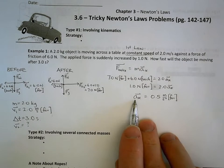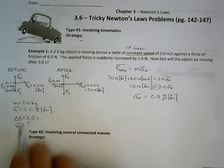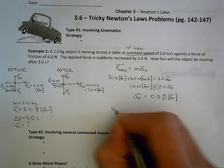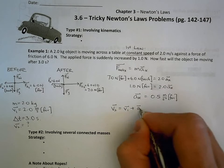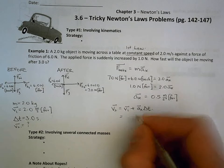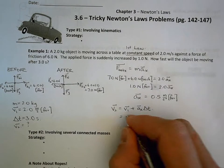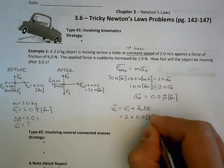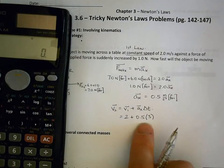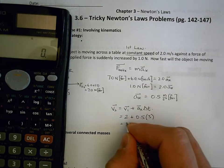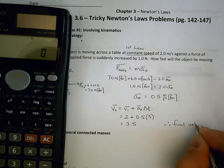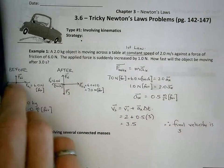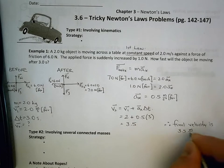Now I know acceleration, V1, and time, and I'm trying to find V2. I'll use one of the big five equations: V2 equals V1 plus acceleration in the x direction times delta t. V1 is 2 plus 0.5 times 3, which is 2 plus 1.5, giving me 3.5. Therefore the final velocity is 3.5 meters per second forward.